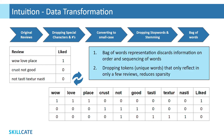Bag of words representation is called so as it discards information on the order and sequencing of words. Also, when we come to the model building part, we would drop some of these tokens that rarely appear in our reviews. That way, we are improving sparsity. To know more on this, refer to the link attached in the description. This completes the data preparation intuition part of our sentiment analysis model.